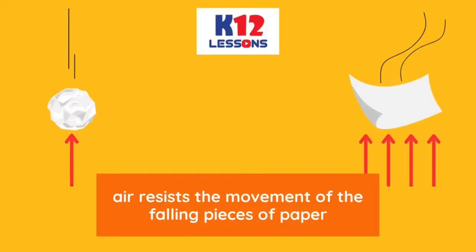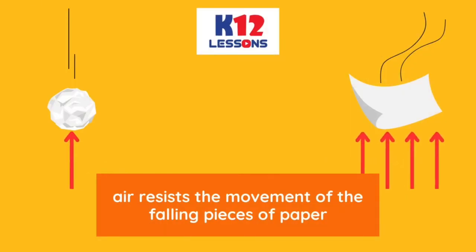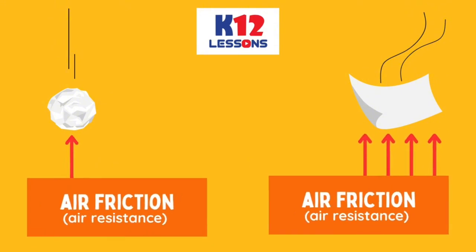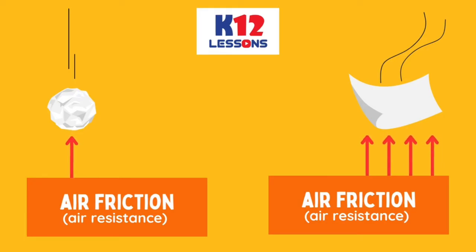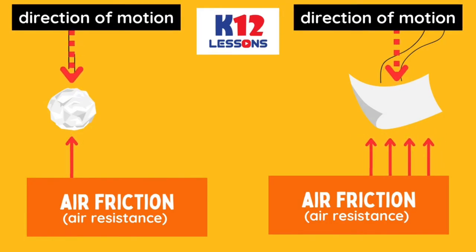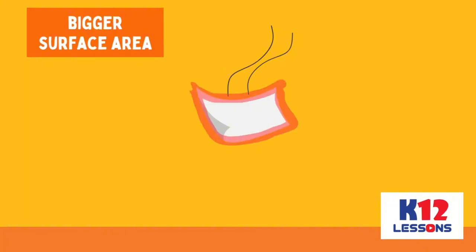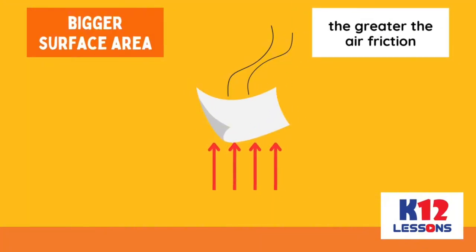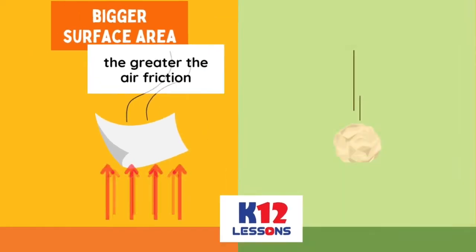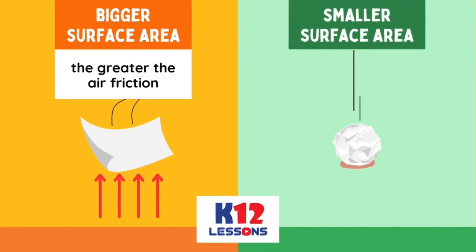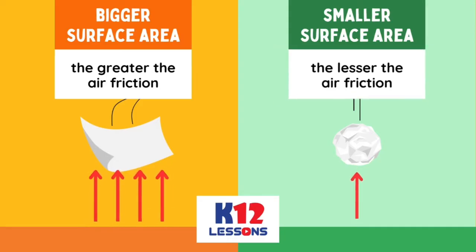In Activity 2, air resists the movement of the falling pieces of paper. This air resistance is also known as air friction, as introduced in lesson 1. It acts opposite the direction of motion of falling objects. The bigger the surface area of falling objects, the greater the air friction. The smaller the surface area of falling objects, the lesser the air friction.